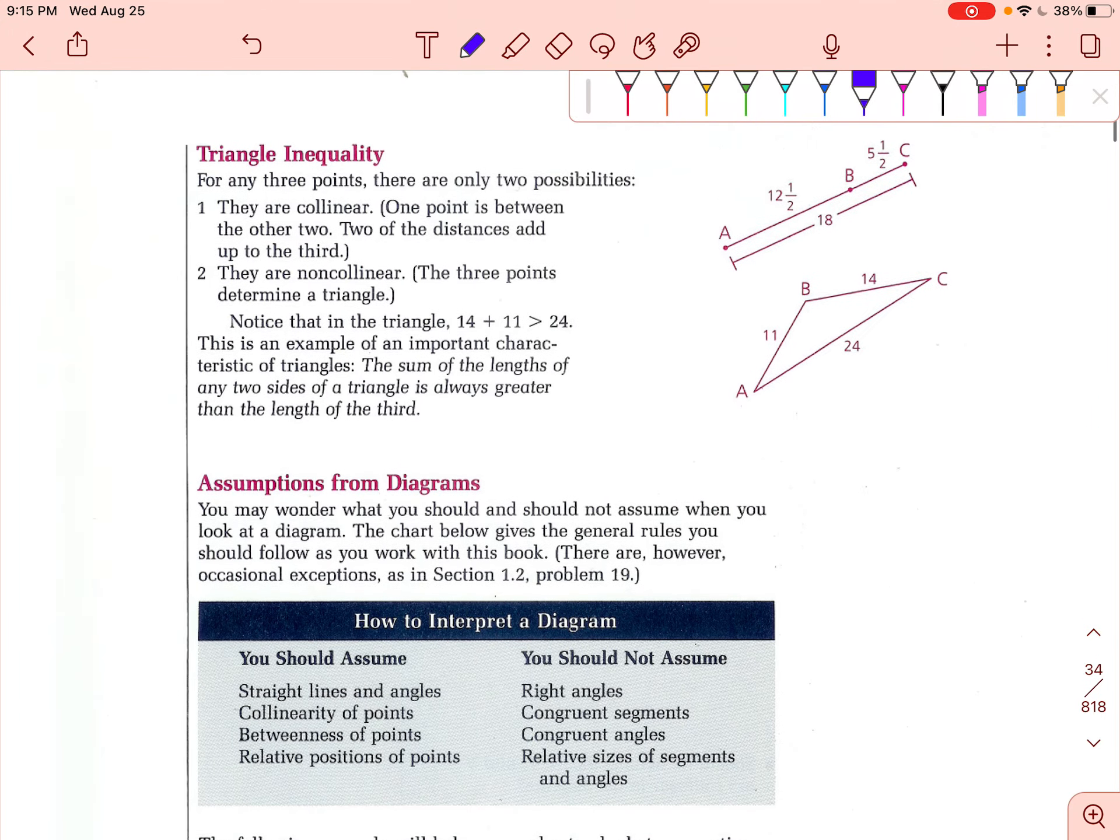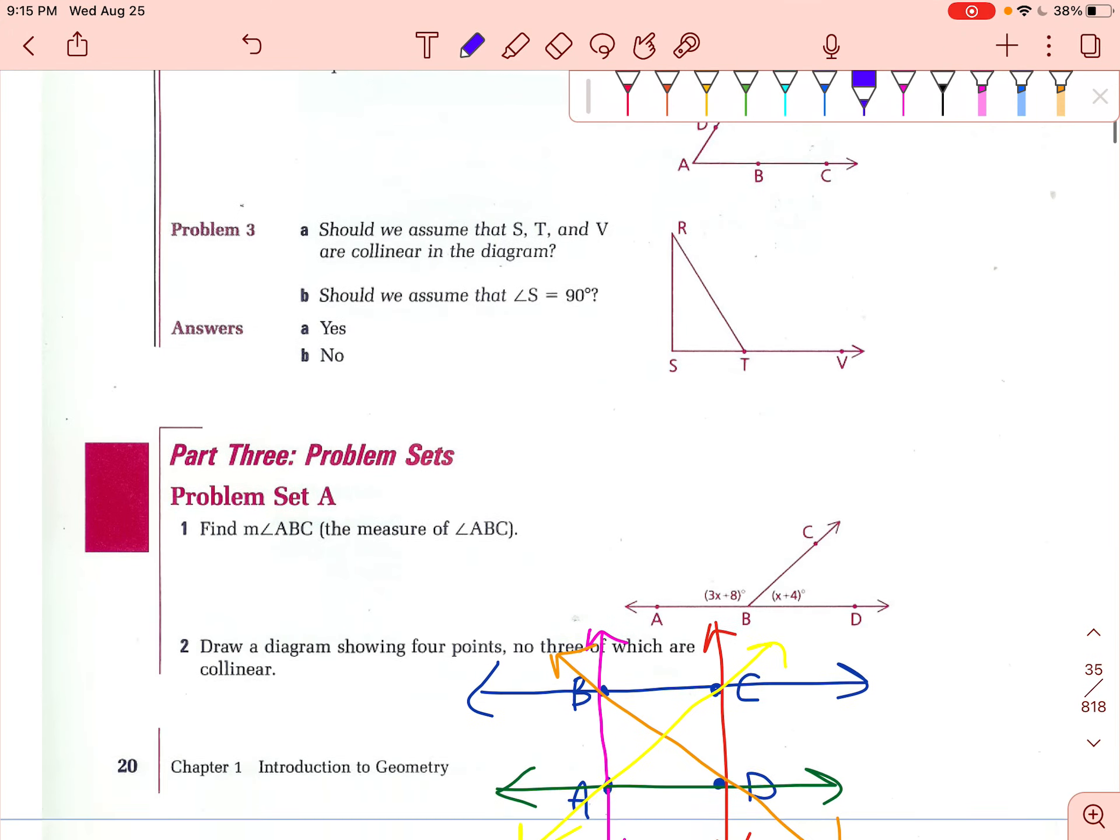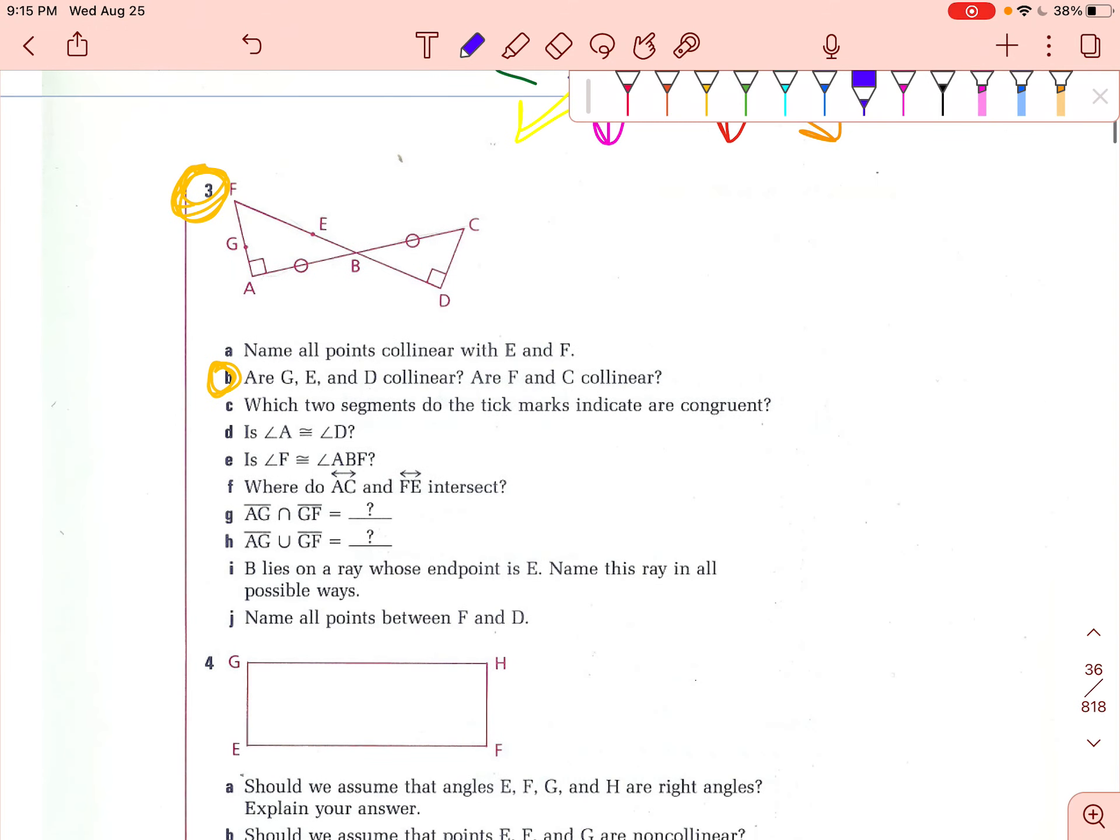We're moving on to 1.3, number 3. B, here it is. So our G, E, and D collinear. So in other words, can I take G, E, and D and make a straight line? Are they all in a straight line together? And the answer is no. It says our F and C collinear.